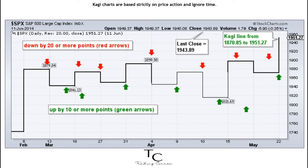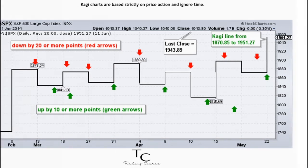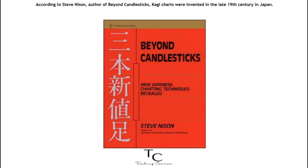Kagi charts are based strictly on price action and ignore time. According to Steve Nissen, author of Beyond Candlesticks, Kagi charts were invented in the late 19th century in Japan.